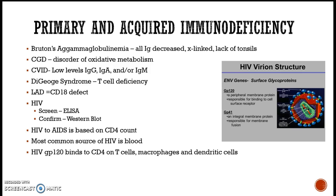For primary and acquired immunodeficiency, know the brief definitions and how to differentiate them — you don't need every single detail. For HIV, know that glycoprotein 120 binds to CD4, and gp41 is an integral membrane protein.